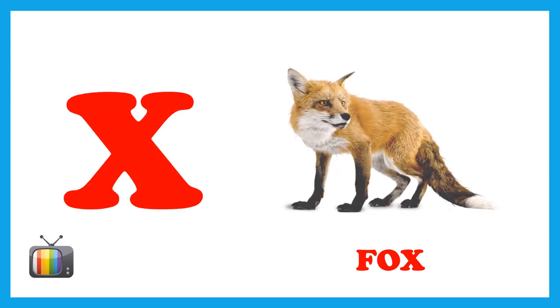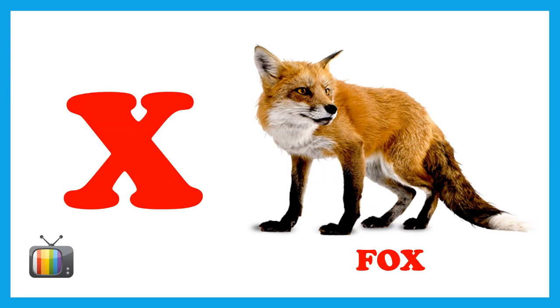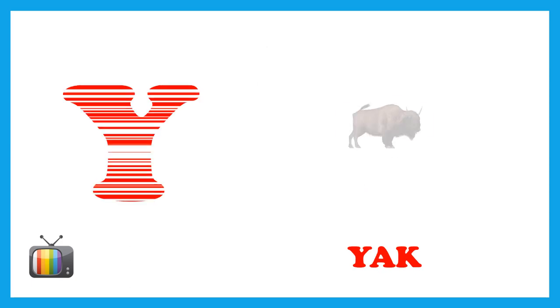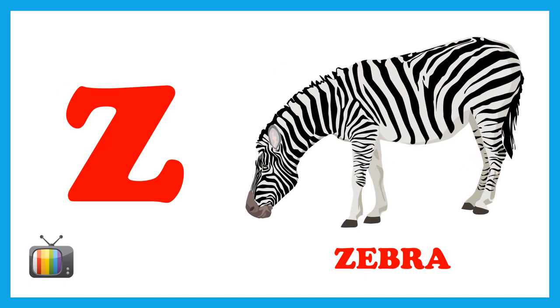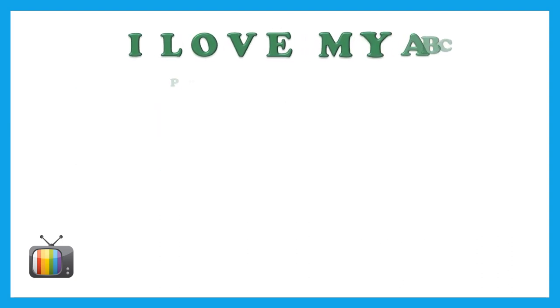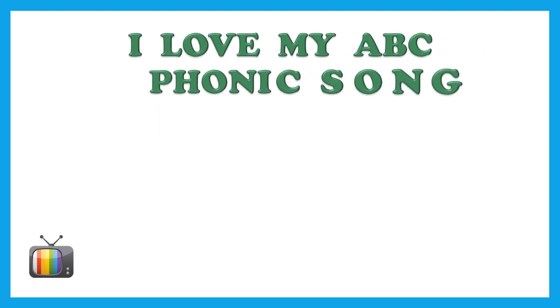X is for fox, x-x-x-fox. Y is for yak, y-y-y-yak. Z is for zebra, z-z-z-zebra. I love my ABC phonic song.